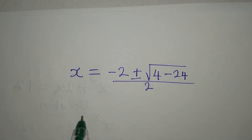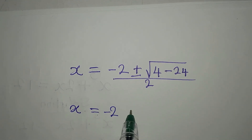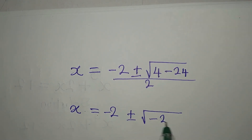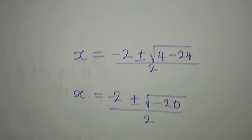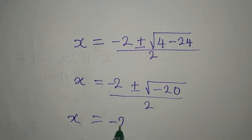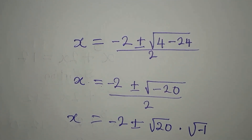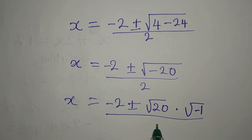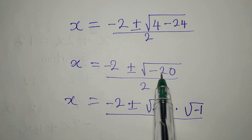So x equals minus 2 plus or minus square root of minus 20, divided by 2. We separate the negative: square root of minus 20 becomes square root of 20 times square root of negative 1.